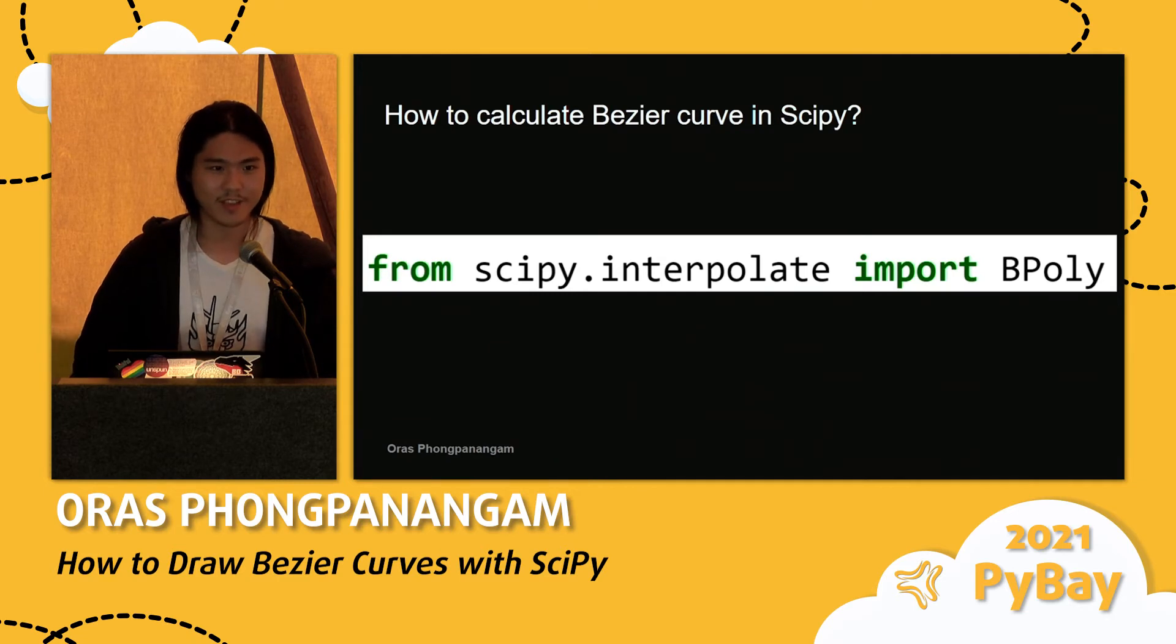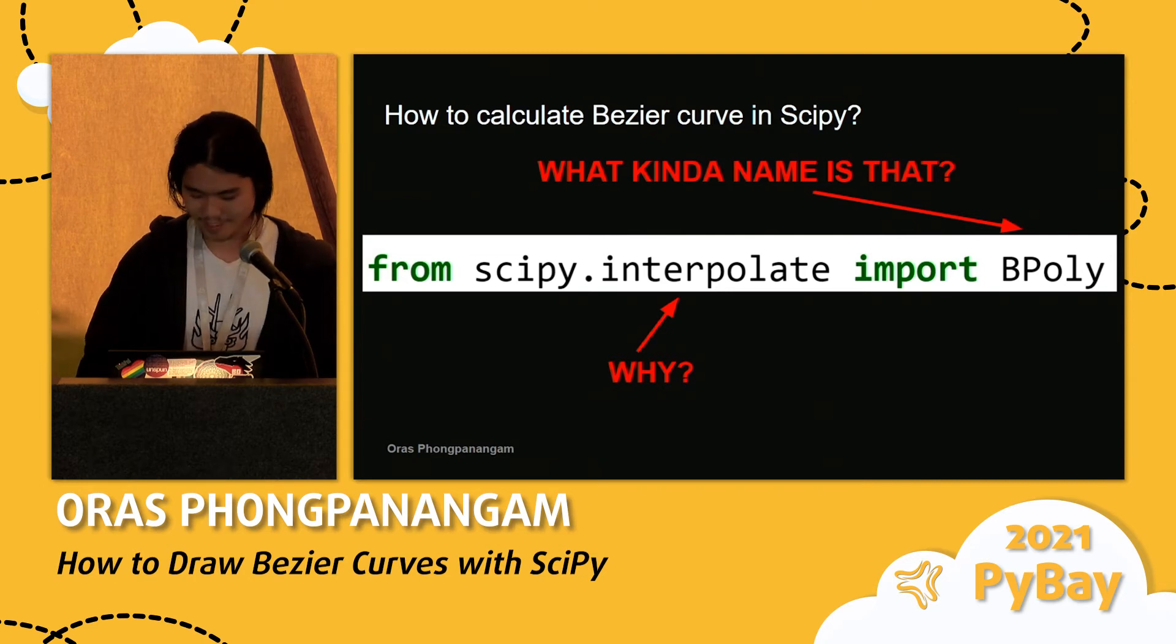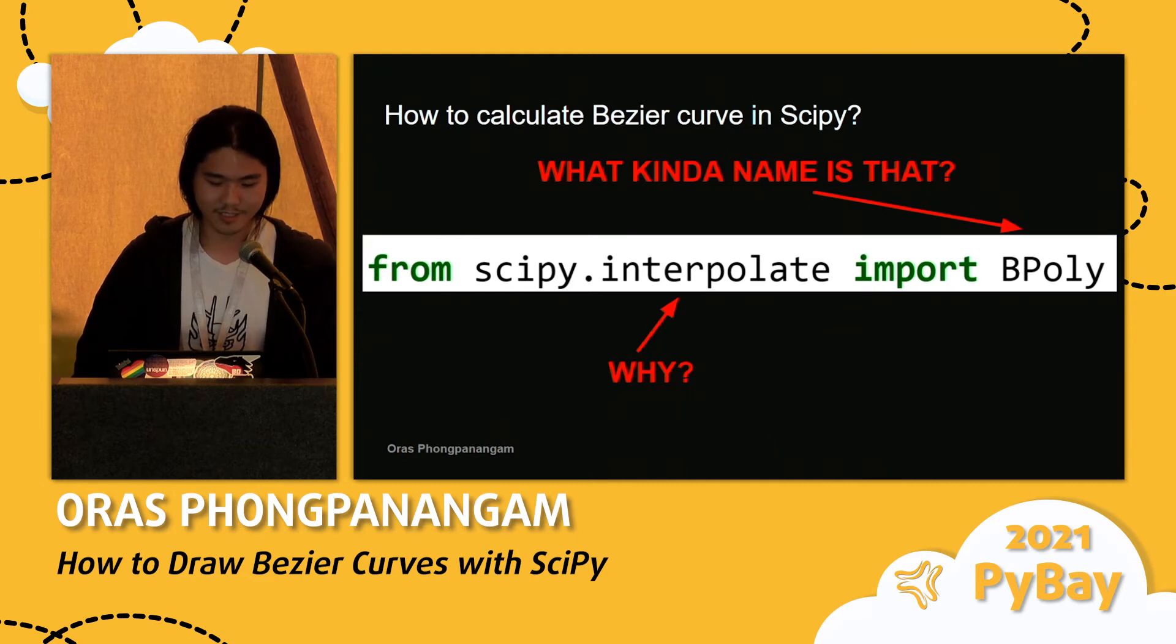But if you are like me, my first reaction was, what the heck is that name? So it's interpolate. Interpolate kind of makes sense, but why is it called Bpoly? So it took me a while to actually make sense of that, which is why I want to talk about it today, about how I made sense of it.